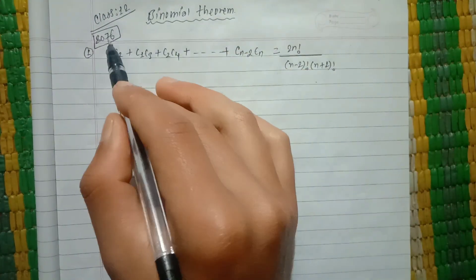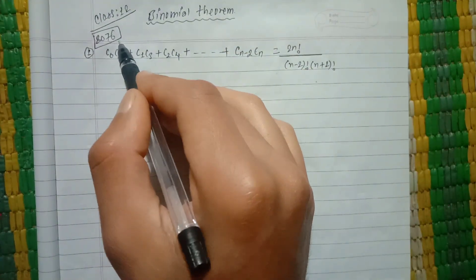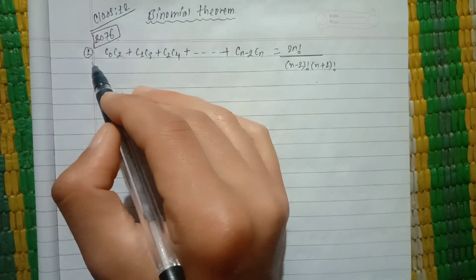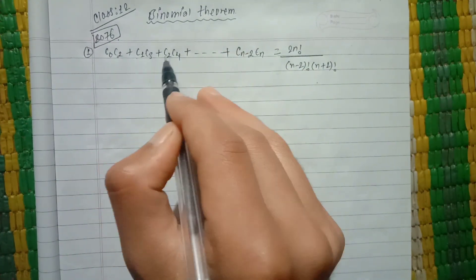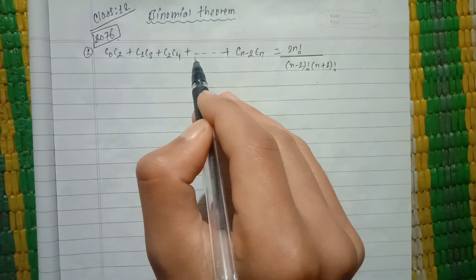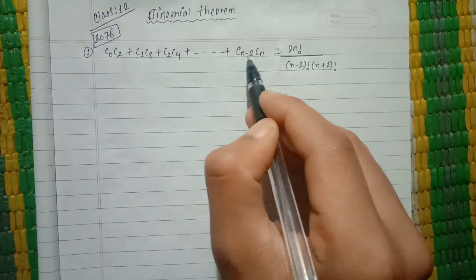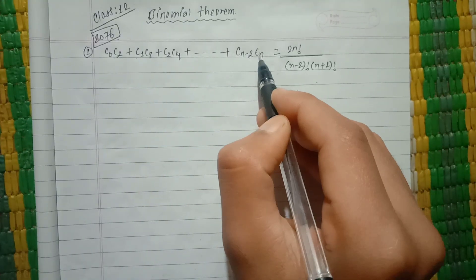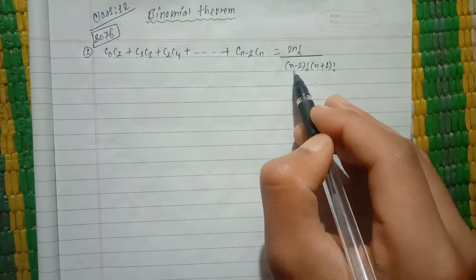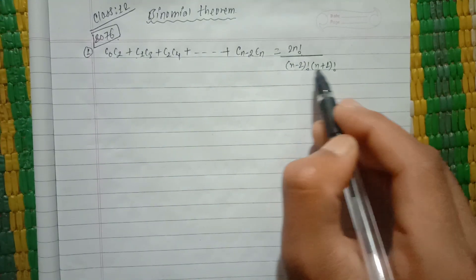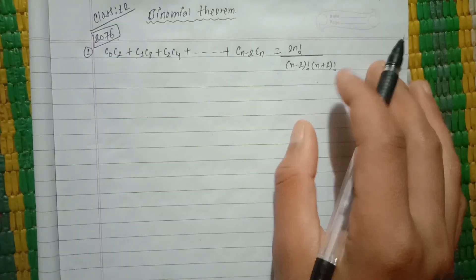Classical binomial theorem — 2076 equation. We need to prove that c₀c₂ + c₁c₃ + c₂c₄ + ... + cₙ₋₁cₙ equals (2n)! divided by (n−2)!(n+2)!.